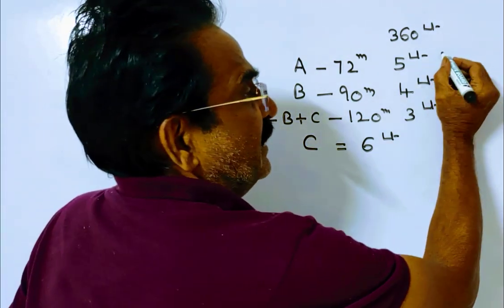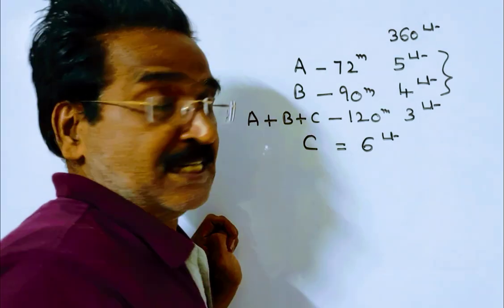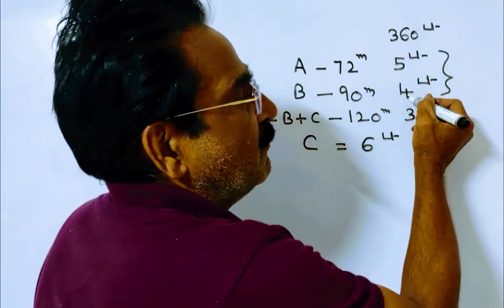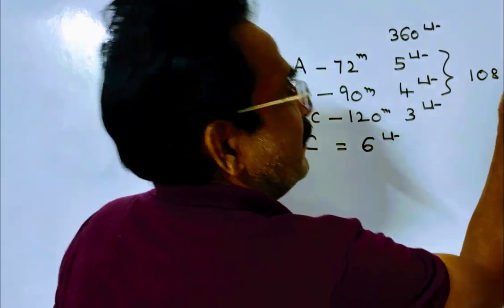Now it is given A plus B worked for 12 minutes. In 12 minutes, A plus B fill 12 into 9, that's 108 liters.